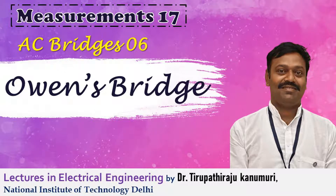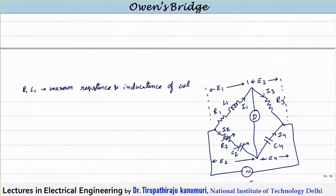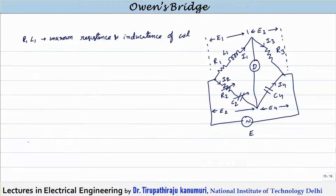Hi all, today we are going to discuss about Owen's Bridge. This Owen's Bridge is used for measuring the self-inductance over a very wide range by employing a variable capacitor of reasonable size. Here if you see the diagram, this Owen's Bridge will be like this.